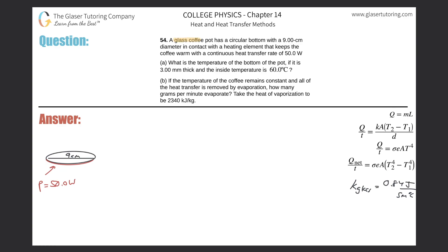Number 54. A glass coffee pot has a circular bottom with a 9 centimeter diameter in contact with a heating element that keeps the coffee warm with a continuous heat transfer rate of 50 watts. Letter A, what is the temperature of the bottom of the pot if it is 3 millimeters thick and the inside temperature is 60 degrees Celsius?